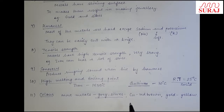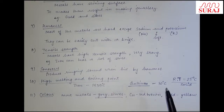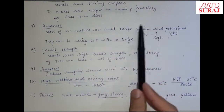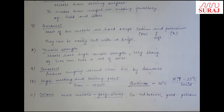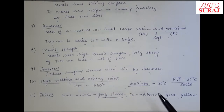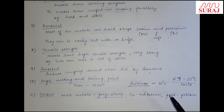यहाँ तक physical properties of metals complete हो गई हैं। इन सारी properties को अच्छे से देख लेना — जैसे hardness में sodium और potassium का exception याद रहे, और high melting point में gallium का example याद रहे। Next class में we will discuss chemical properties of metals — कि metal air, water, और अलग-अलग substances के साथ react करके क्या reaction show करता है और क्या product बनाता है।